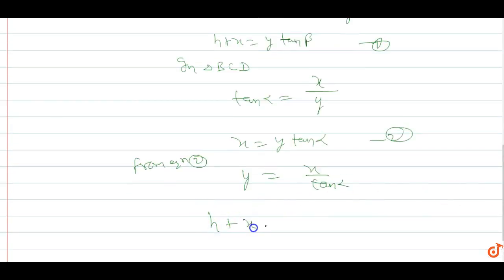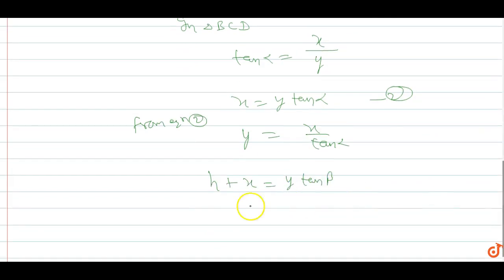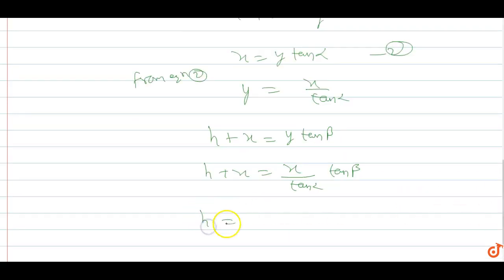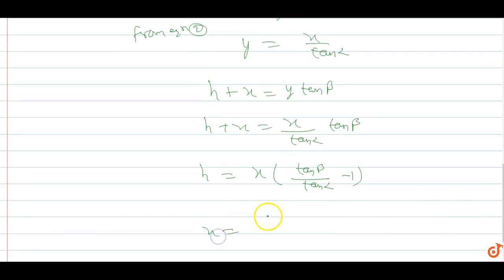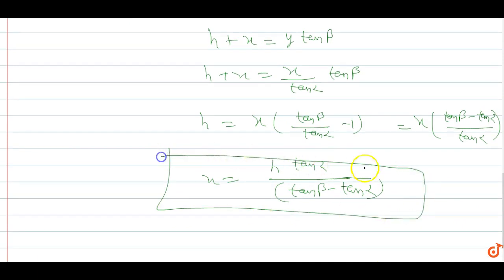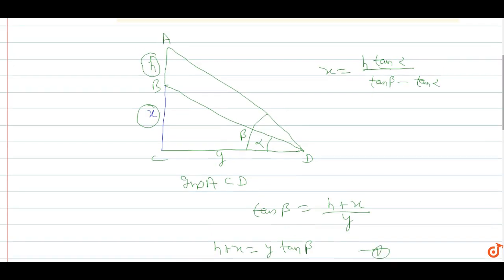The first equation is h plus x equals y tan beta. Substituting y's value: h plus x equals x upon tan alpha times tan beta. From here, h equals x times (tan beta by tan alpha minus 1). So x equals h tan alpha upon tan beta minus tan alpha. This is the height of the tower.